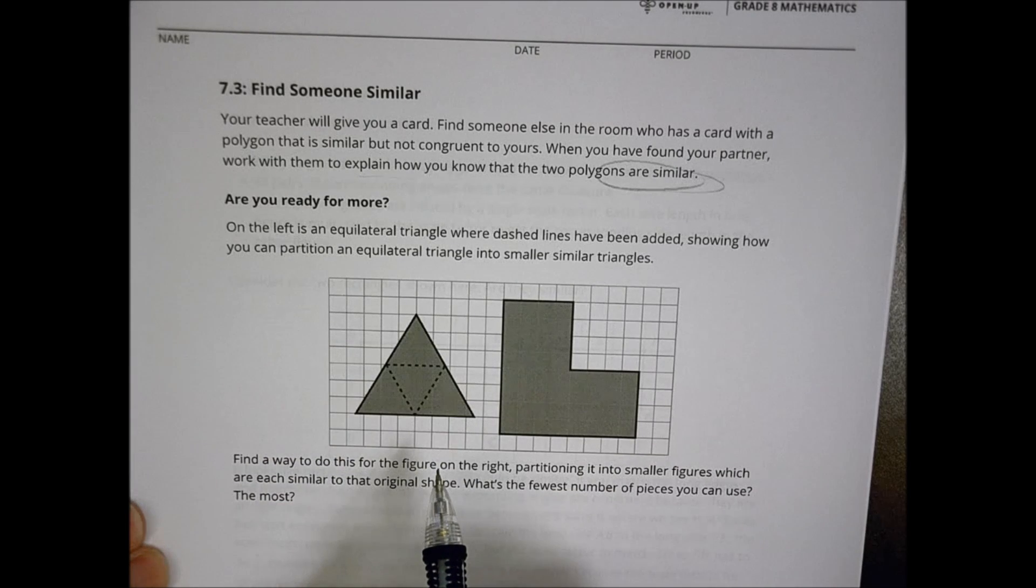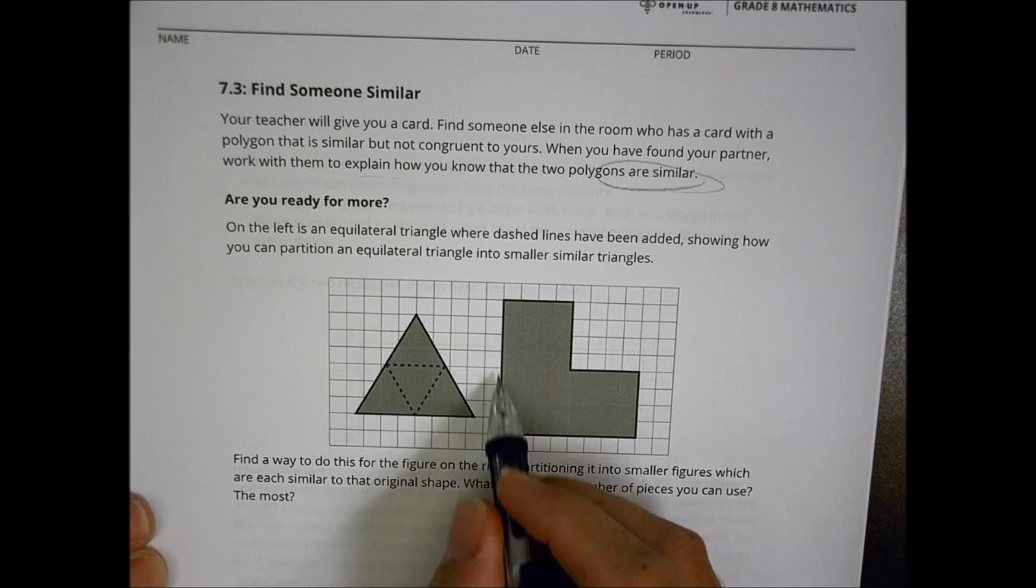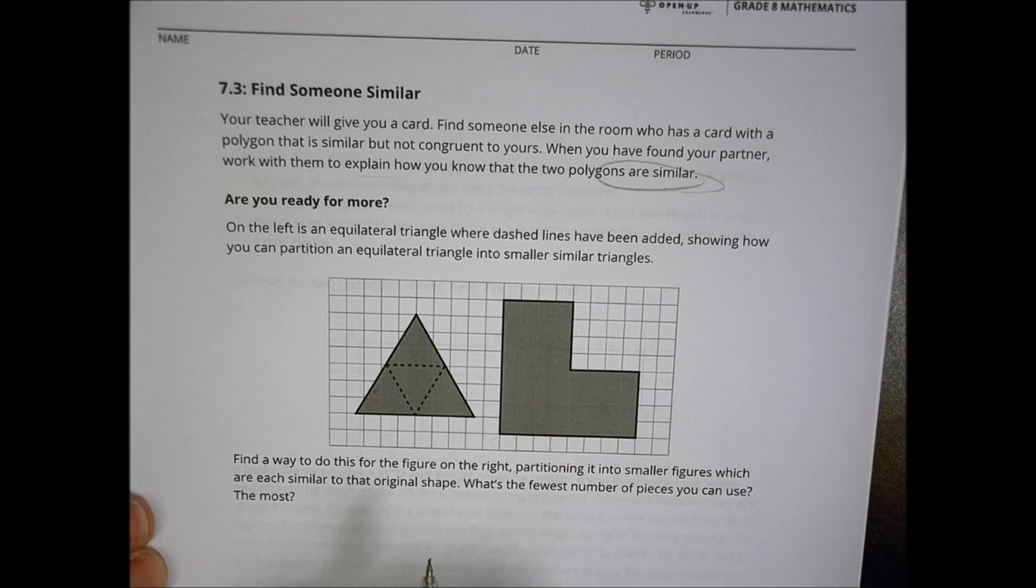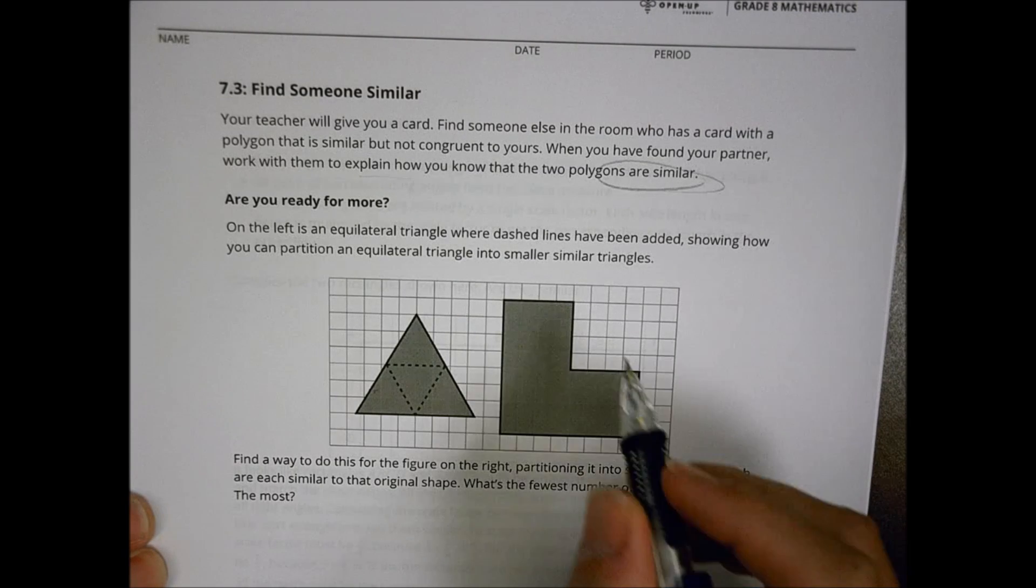From there you moved on to a little are you ready for more perhaps. You did this one here. And it's kind of a fun way to say, how can I make these shapes the same way? You have equilateral triangle which is divided up there. And can we do that with the position one on the right to make a similar figure to the original? Yep, you can.